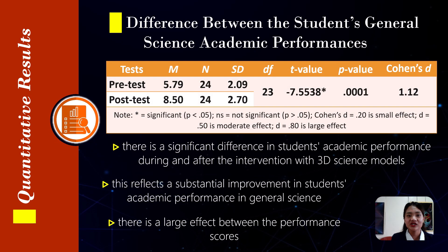This table indicates a significant difference in students' academic performance during and after the intervention with 3D science models. There is a significant improvement from pre-test scores to post-test scores, reflecting a substantial improvement in students' academic performance in general science. Additional analysis indicates a large effect between performance scores. These findings imply that incorporating 3D technology in the classroom can effectively improve students' learning outcomes in science education.